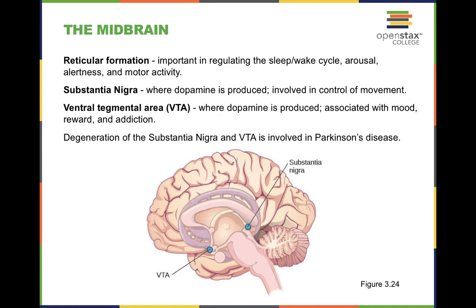The next category is the midbrain, which involves really important structures for dopamine production, such as the substantia nigra as well as the VTA. Another structure in the midbrain that's really important is the reticular formation, which is crucial for regulating the sleep-wake cycle. When we get into later chapters talking about jet lag, this reticular formation structure will come back up.